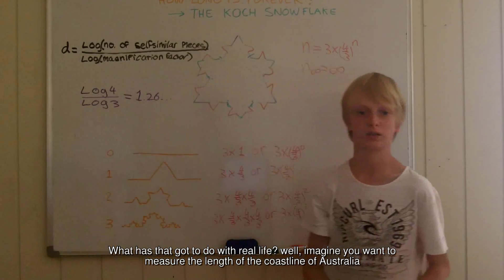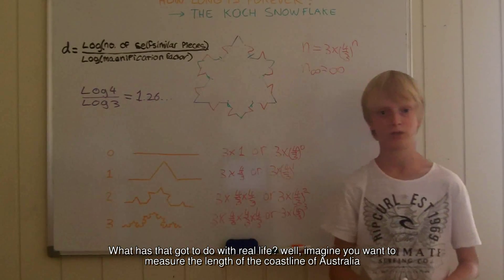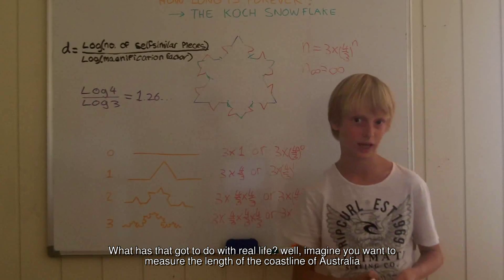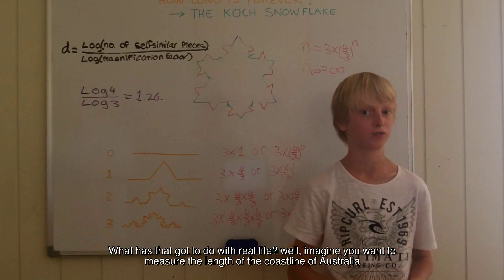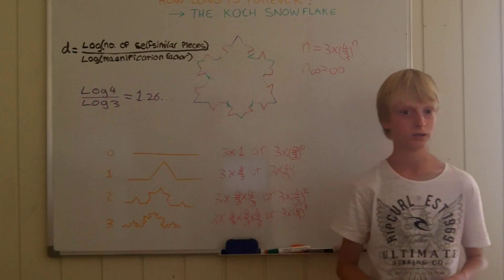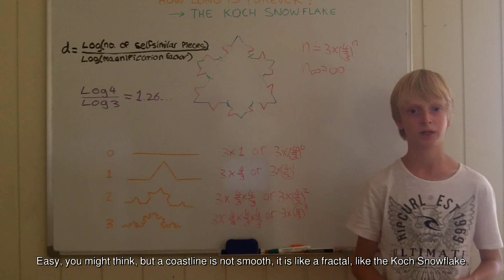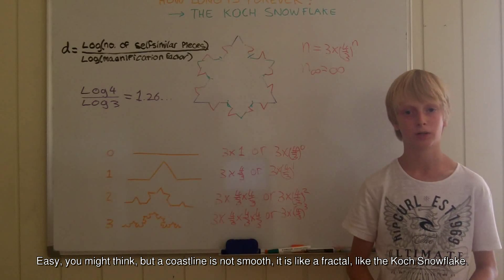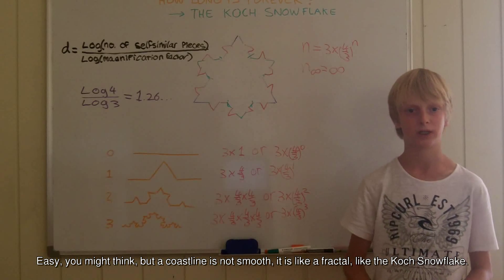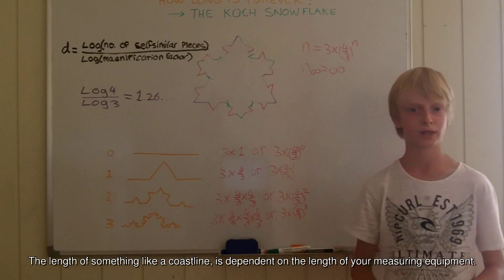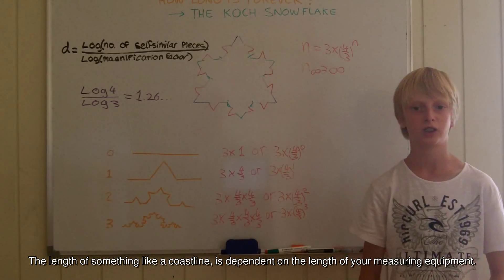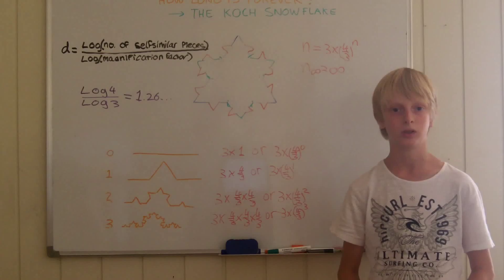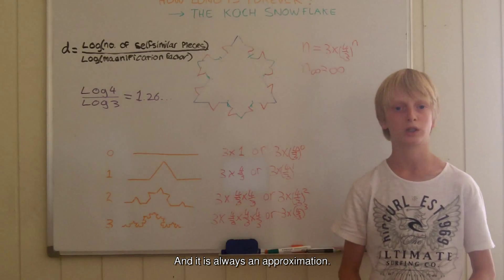What does that have to do with real life? Well, imagine you want to measure the length of the coastline of Australia. You might think it's easy, but the coastline is not smooth. It is like a fractal, like the Koch snowflake. The length of something like a coastline is dependent on the length of your measuring equipment, and it's always an approximation.